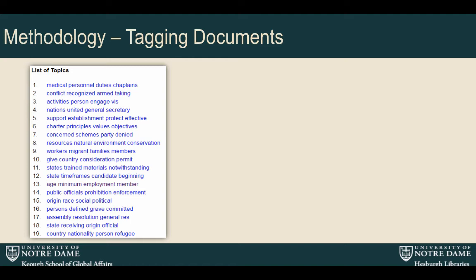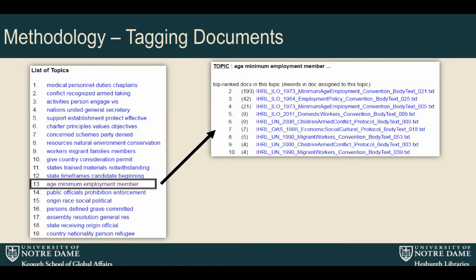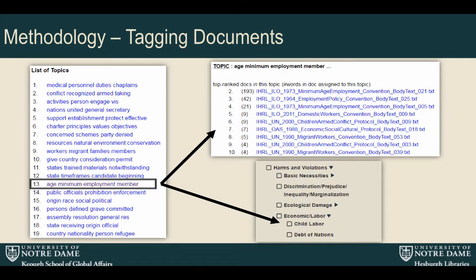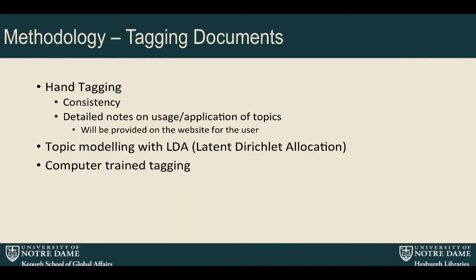We did some topic modeling of our text — fed our text in and compared the topics generated by the model to actual documents within the text and to our controlled vocabulary. This allowed us to get a lot more data, more robust tagging of the text, and a good base training set. At this point we have that base training set, and as we continue to add documents, we will use that training and continue to use text analysis to tag further documents as we add them.